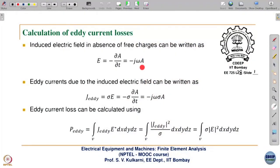So E = -∂A/∂t, which equals -jωA since ∂/∂t converts to jω in the frequency domain. The eddy current due to the induced electric field will be J_ad = σE = -σ∂A/∂t. This we have seen earlier; in fact, it appears in the diffusion equation. So, J_ad = -jωσA.